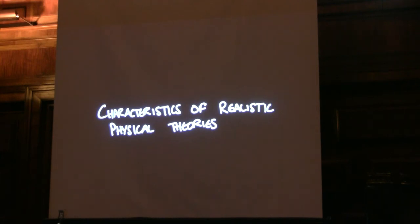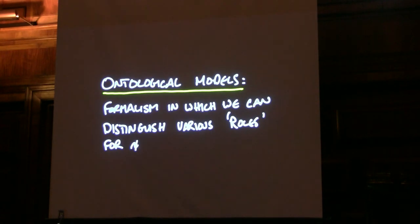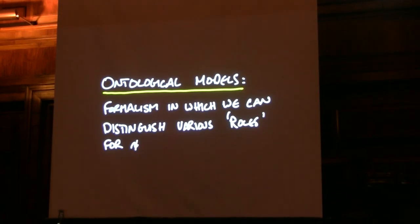You might take the view that quantum theory is operational or instrumental — that it allows us to calculate the probabilities of certain detectors clicking when we have experiments, with preparation devices set in certain ways, and all we can really say is the propensities of certain detectors to click. The ontological models program allows us to distinguish things like this in a really sharp way, and we can point to certain characteristics of ontological models which we take to be the realistic part.